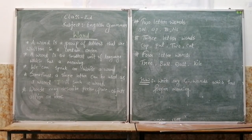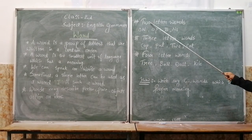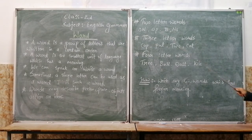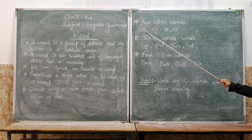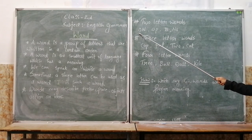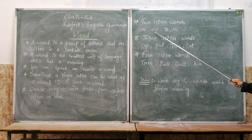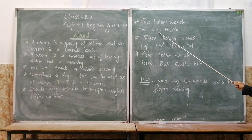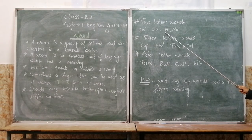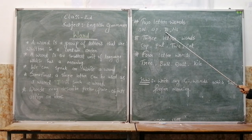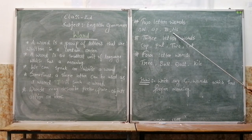So today we are going to learn about some words. Here are two-letter words. Like O-N, 'on'. O is the first letter and N is the second letter, so O-N is a two-letter word. U-P, 'up' — U is the first letter and P is the second letter. N-O, 'no' — this is also a two-letter word.